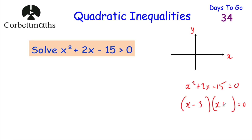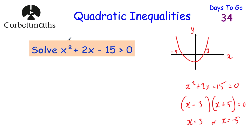Factorizing: I'm thinking negative 3 and plus 5, because negative 3 times 5 is negative 15 and minus 3 plus 5 is 2. So that means x equals 3 or x equals minus 5 — those are the points where it crosses the x axis, at x equals negative 5 and x equals 3. We've now sketched y equals x squared plus 2x minus 15, and we want to find when that quadratic is bigger than 0 — which values of x, when substituted in, give a positive result.